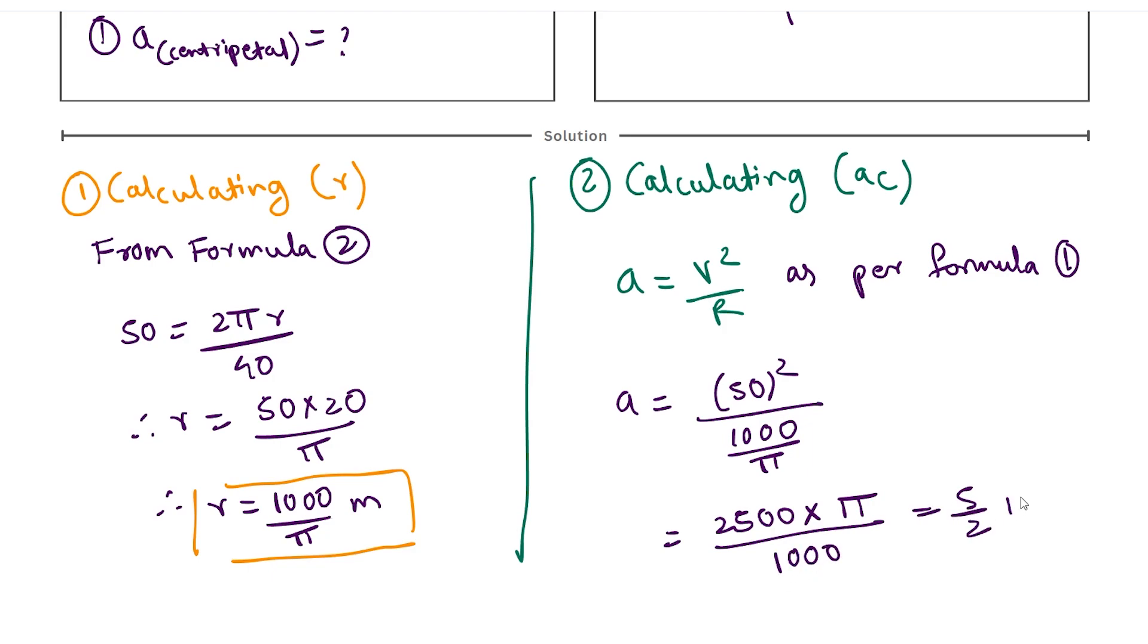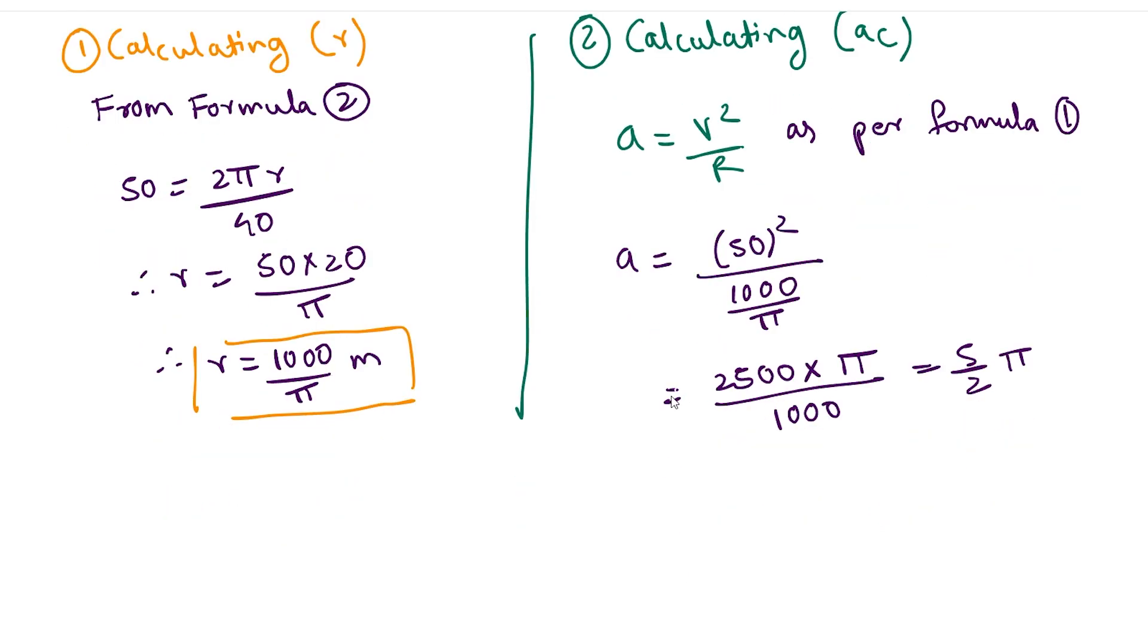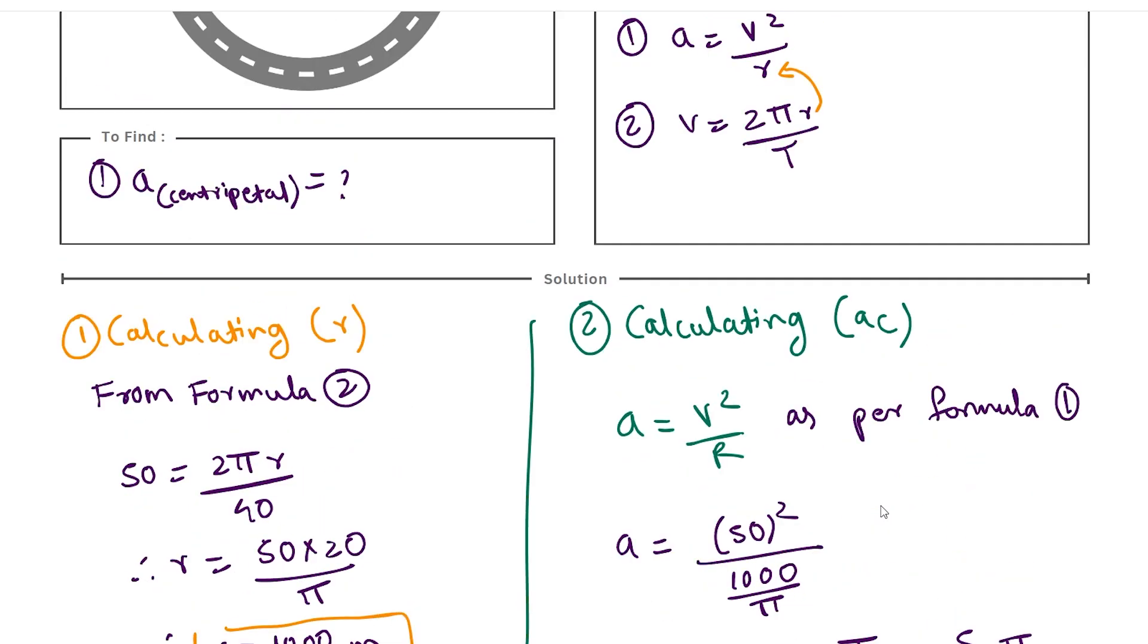This comes out to be (5/2)π. Now let us express this value in terms of a decimal number. So a comes out to be 7.85 meters per second squared. Units are very, very important—all SI units.